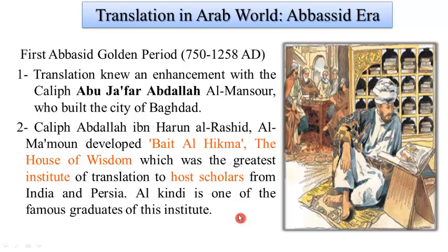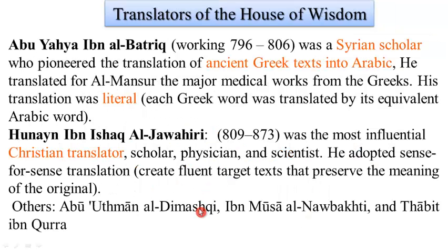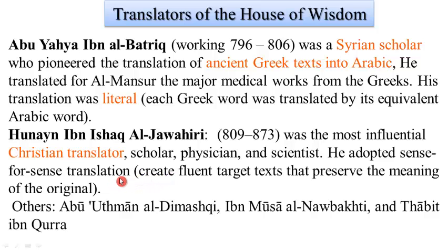Al-Kindi translated Aristotle and became one of the scholars of the time. A famous translator of Bayt al-Hikmah was Abu Yahya ibn al-Batriq, who adopted a literal procedure whereby each Greek word was translated by its equivalent Arabic word. The most influential translator was Hunayn ibn Ishaq al-Jawahiri, who translated more than 106 books and came from a family who were all translators.